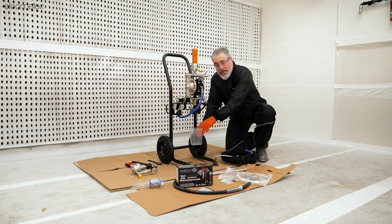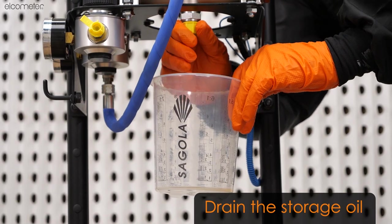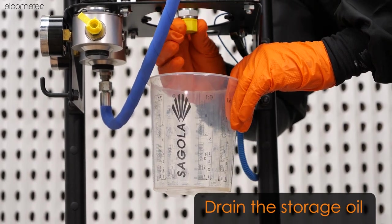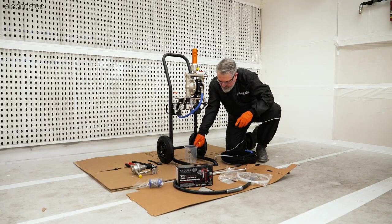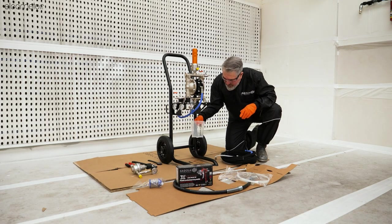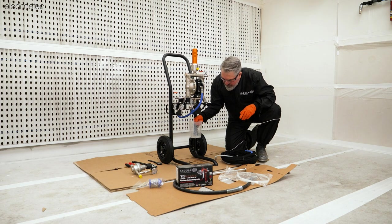Now that we have inspected each individual item for damage or wear, place a rag or a container underneath the pump and remove the yellow protection cap. Oil may begin to flow out, but don't be alarmed. This oil is simply there to protect the interior components of the pump from corrosion during storage and transit.